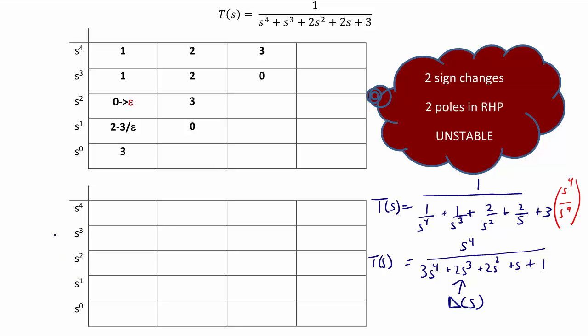So the first row is going to be 3, 2, 1. The second row is going to be 2, 1, 0.